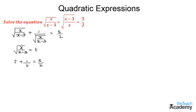Now let us take the LCM as t. So we get t squared plus 1, divided by t, is equal to 5 by 2. Now let us cross multiply. On multiplying 2 with (t squared plus 1) we get 2t squared plus 2 is equal to 5t.